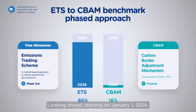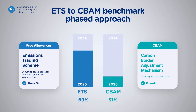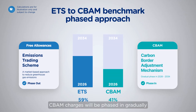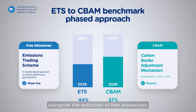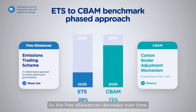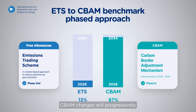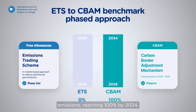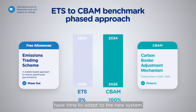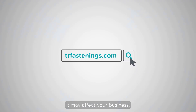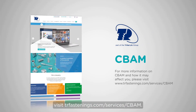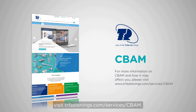Looking ahead, starting on January 1st, 2026, CBAM charges will be phased in gradually alongside the reduction of free allowances. As the free allowances decrease over time, CBAM charges will progressively apply to a greater share of embedded emissions, reaching 100% by 2034. This gradual phase-in ensures importers have time to adapt to the new system, while aligning the CBAM tariff with the EU's broader climate objectives. For more information on CBAM and how it may affect your business, visit trfastenings.com/services/CBAM.